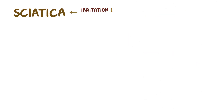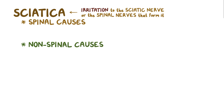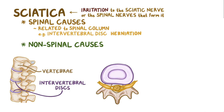Sciatica occurs when there's irritation to any part of the sciatic nerve or the spinal nerves that form it. The causes of sciatica can be divided into two groups: spinal and non-spinal. The most common spinal cause is intervertebral disc herniation. The intervertebral discs lie between vertebrae and act as shock absorbers. Each disc is made of two parts: the outer fibrous ring called the annulus fibrosis, and the inner gel-like pulp called the nucleus pulposis.